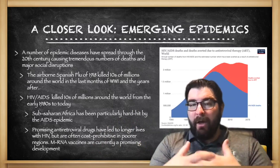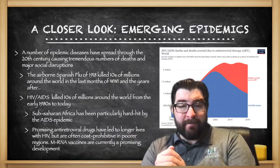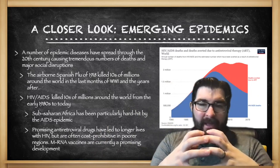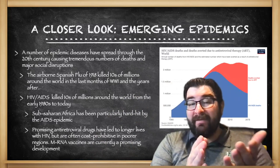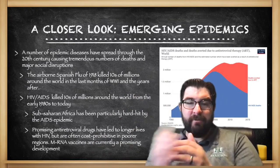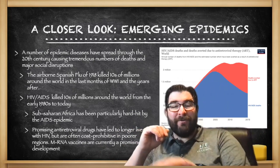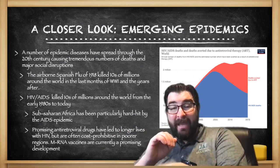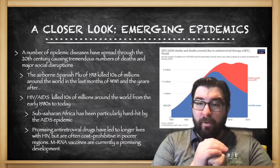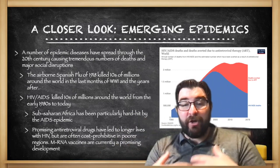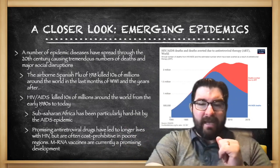A number of epidemic diseases spread throughout the 20th century, causing tremendous deaths and social disruption. In 1918, what was known as the Spanish flu killed tens of millions around the world in the last months of World War I and the years after — the contact of humanity in Europe contributing to its spread. HIV and AIDS in the 1980s have killed tens of millions from the 80s through today, with sub-Saharan Africa particularly hard hit. Promising antiretroviral drugs have led to longer lives with HIV, but are often cost prohibitive in poorer regions. Messenger RNA vaccines are currently promising in the fight against HIV and AIDS, using the same technology as our COVID-19 vaccines.